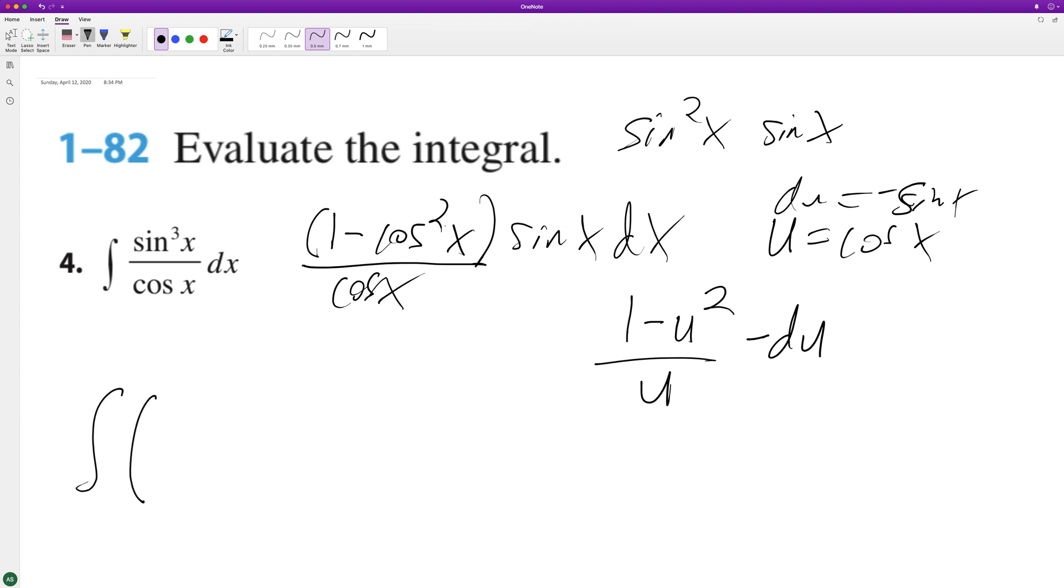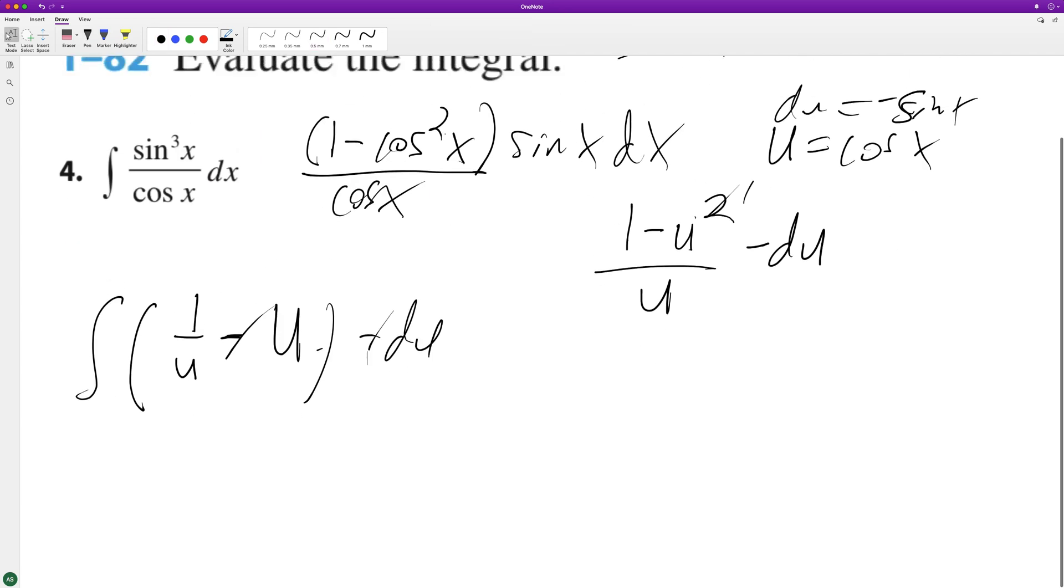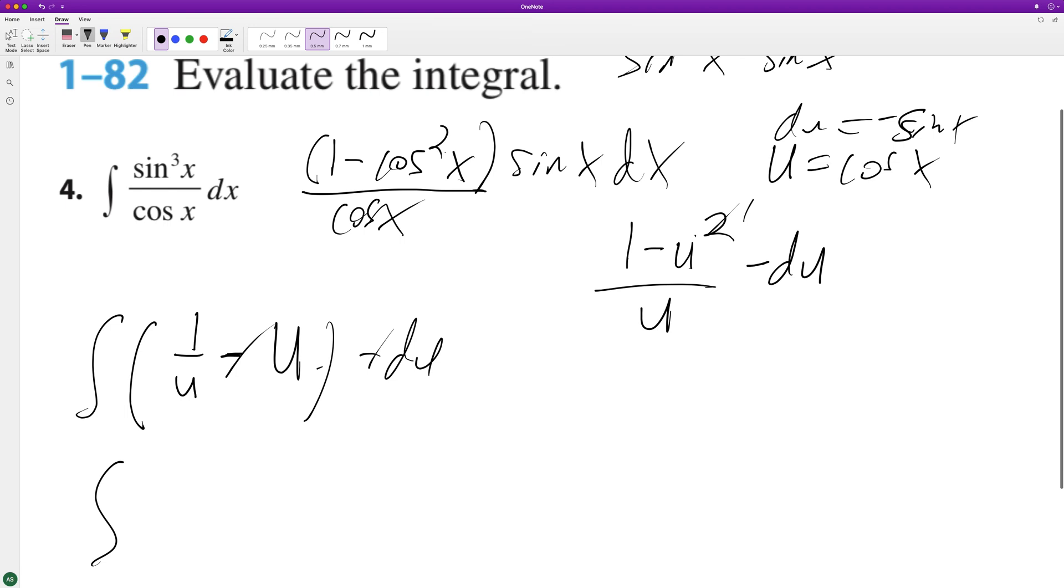So we integrate. And since we can divide through, we get 1 over u minus u, because this just cancels this out to be 1. And then negative du. So we can flop these. So we end up with u minus 1 over u du.